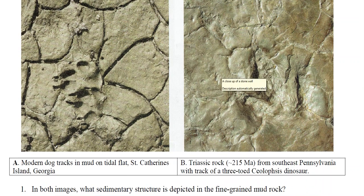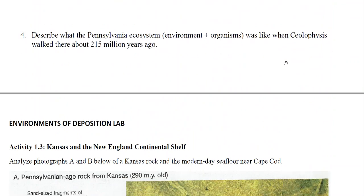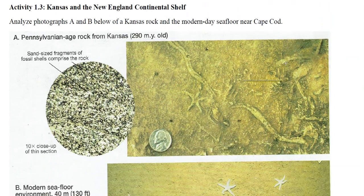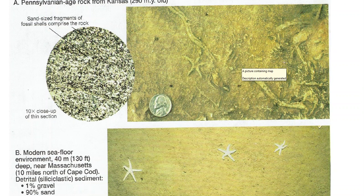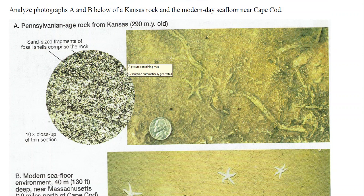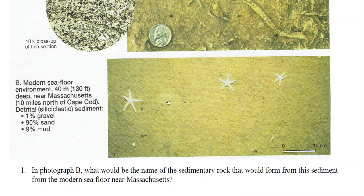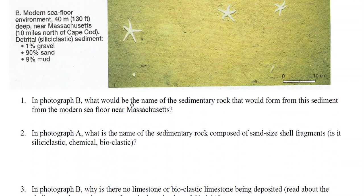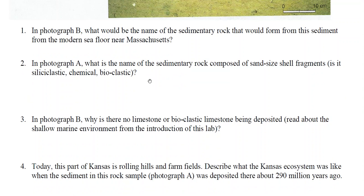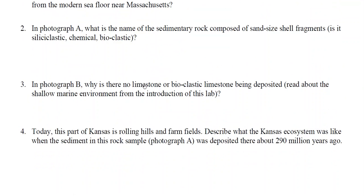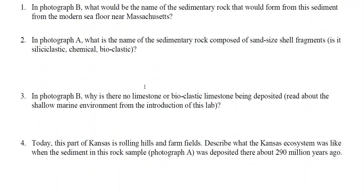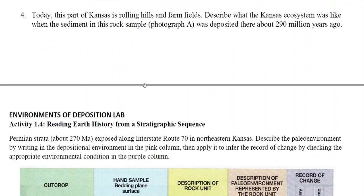For Activity 1.3 we're looking at some marine deposits — ancient Pennsylvanian, 290-million-year-old deposits in Kansas with some fossils, and then the modern seafloor off Cape Cod in New England. This activity is pretty straightforward; you can answer the questions based on the photos and by reading about the different marine environments in the introduction to the lab.